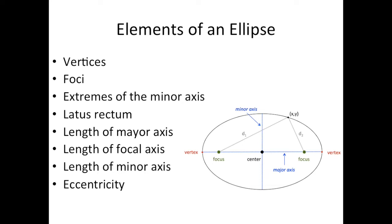But before that, we need to know the elements of an ellipse. An ellipse is going to have two vertices, V1 and V2. It's going to have a center. It's going to have two foci. It has the extremes of the minor axis, which are the two points that make the minor axis. The latus rectum, which is the line that crosses through the focus. The length of the major axis, which is the longest one.